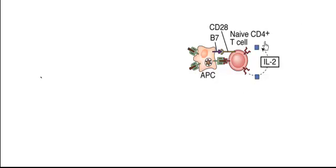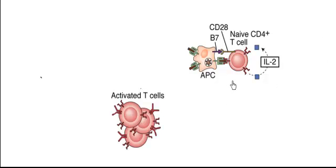In the previous video we discussed that the antigen presenting cells will bind to the naive T cells. Binding of the antigen presenting cell to the naive T cells, production of interleukin, and binding to the receptor will activate the T cells. Now the T cells become activated, and activated T cells will proliferate and become more numerous.